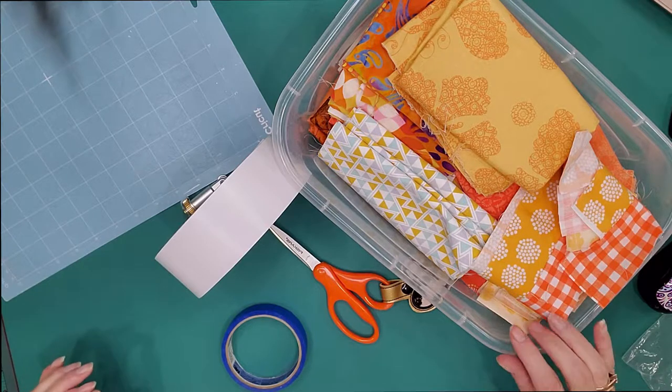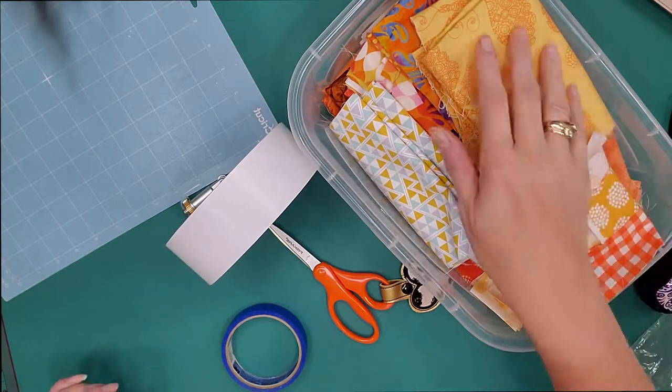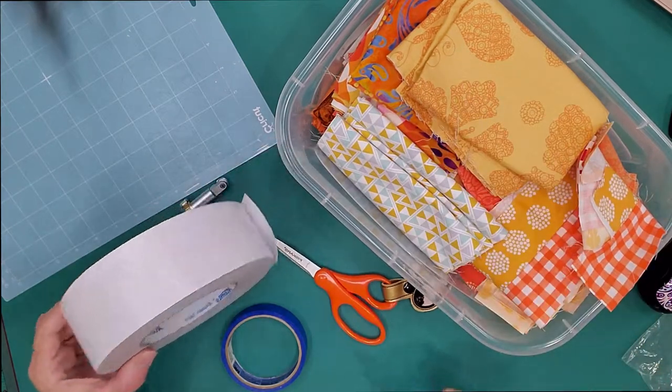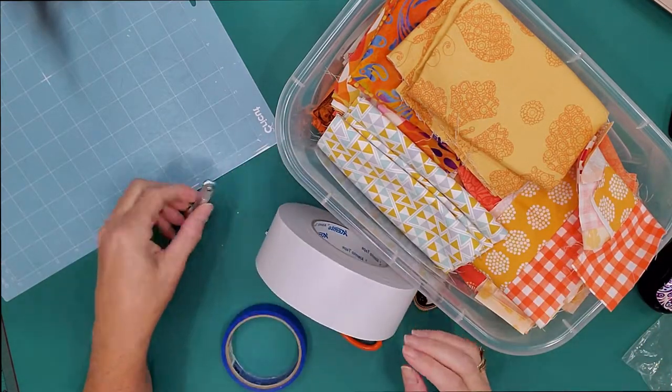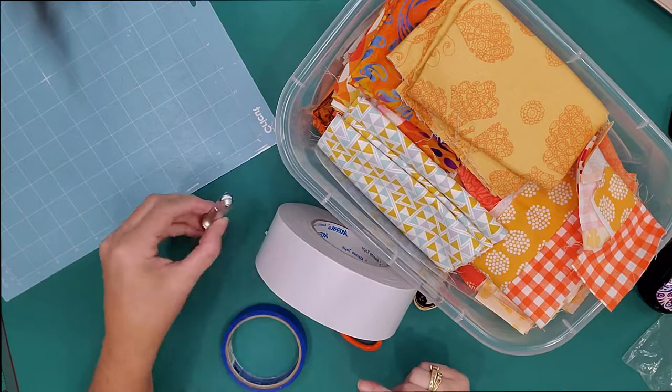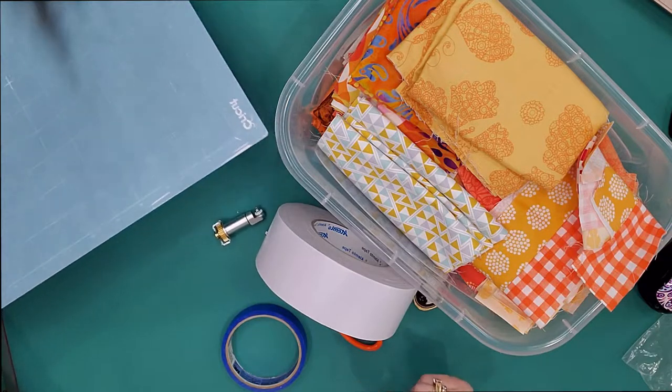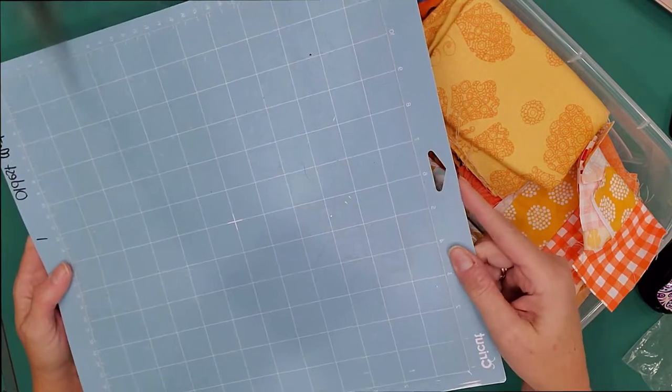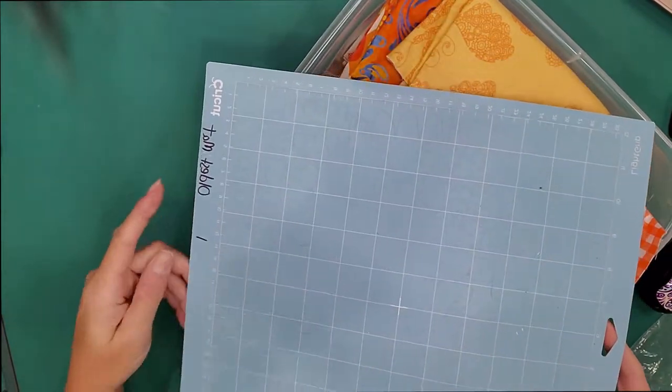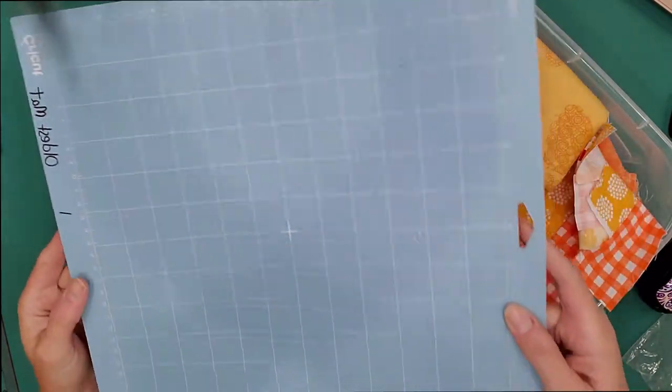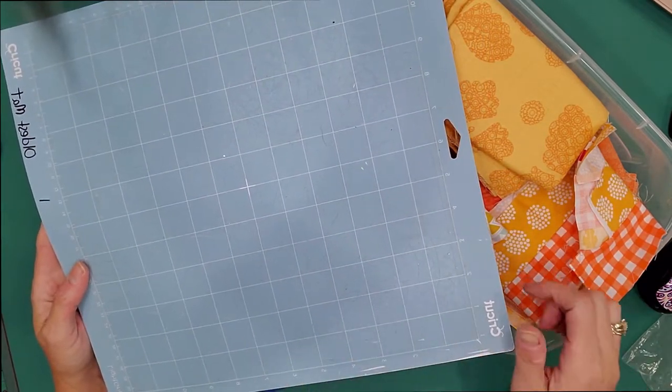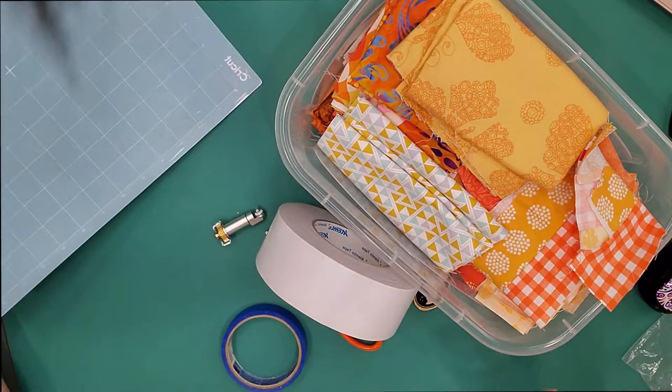Here are the items we're going to need to complete this project. You're going to need some scraps or fabric, carpet tape, and your rotary blade for your Cricut. Now you might think you need your fabric mat but I'm going to use my oldest mat because I'm going to tape everything down so it doesn't really matter what mat you use.